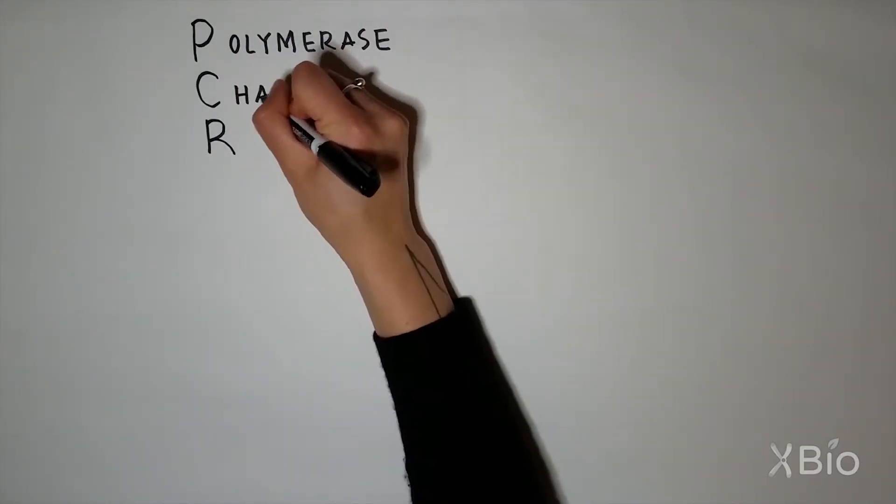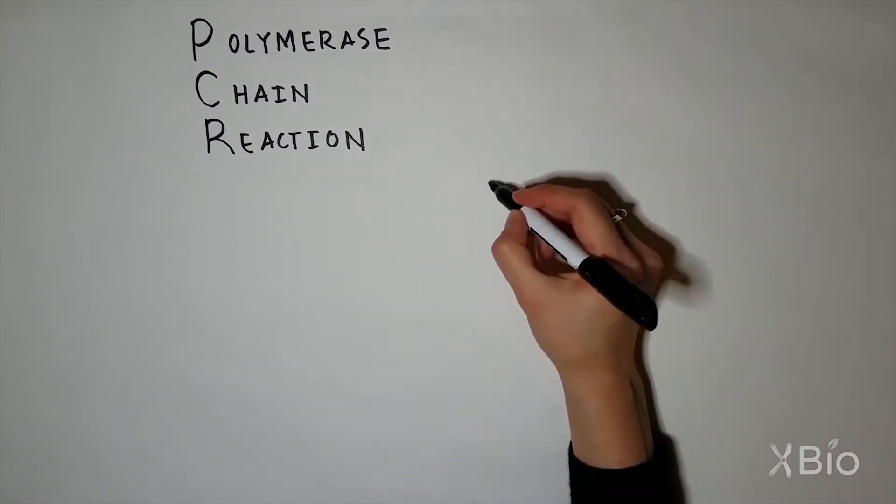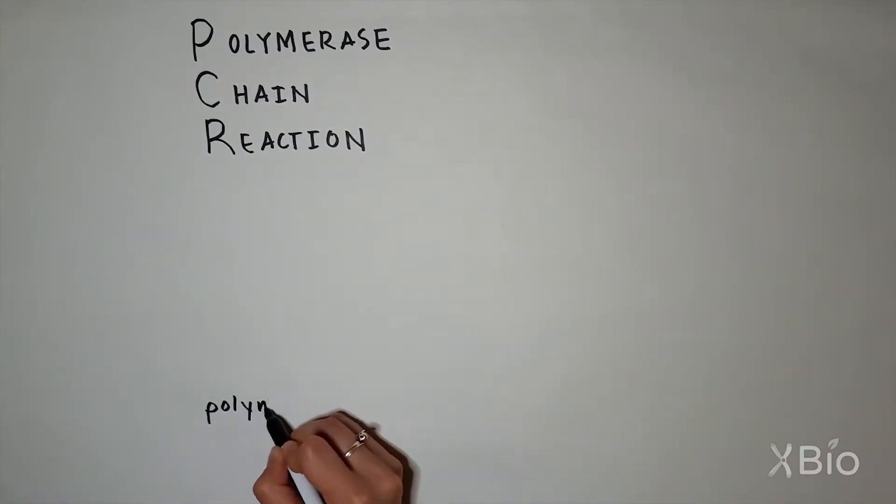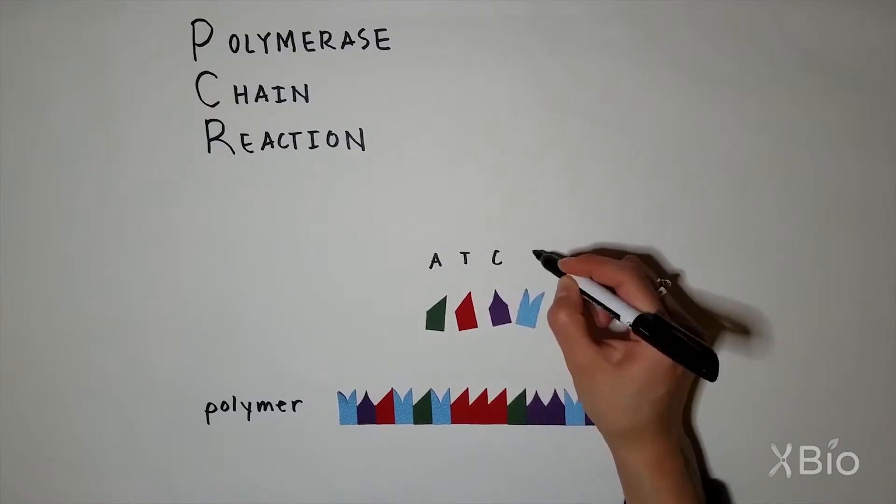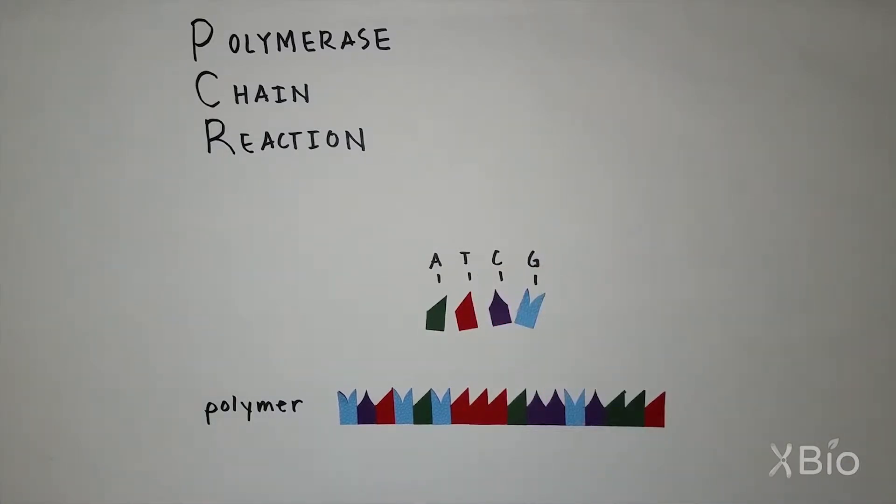PCR stands for polymerase chain reaction, and it's exactly what it sounds like, a chain reaction that creates a polymer, a long molecule made up of repeating units. Those units are four different nucleotide bases, referred to as A, T, C, and G.